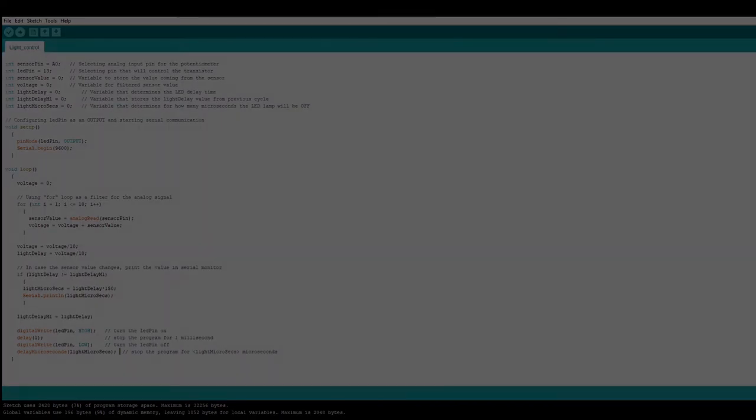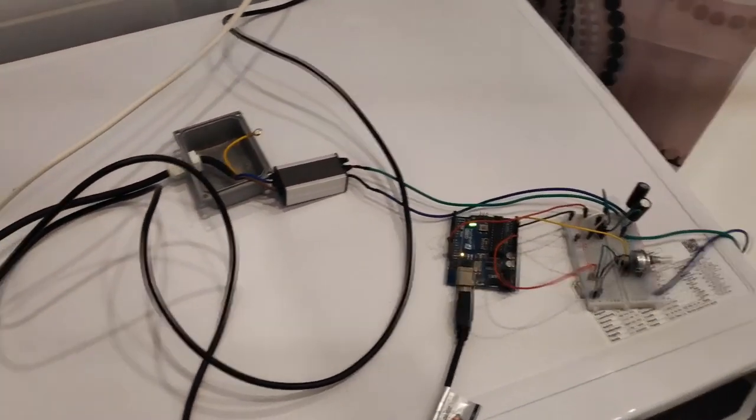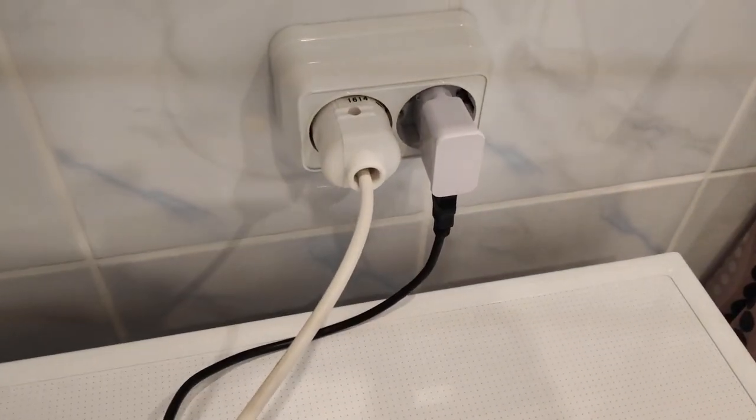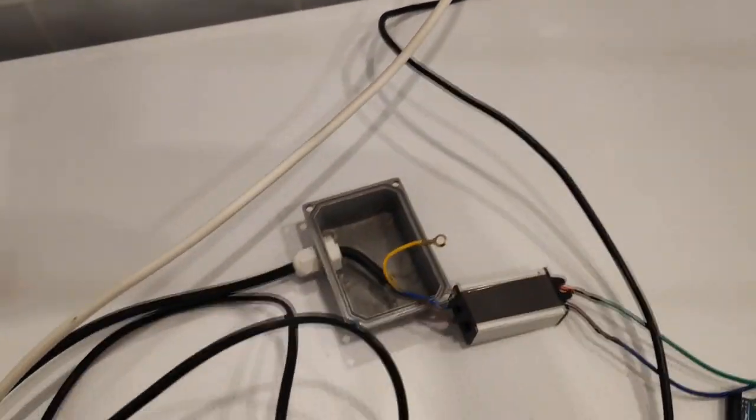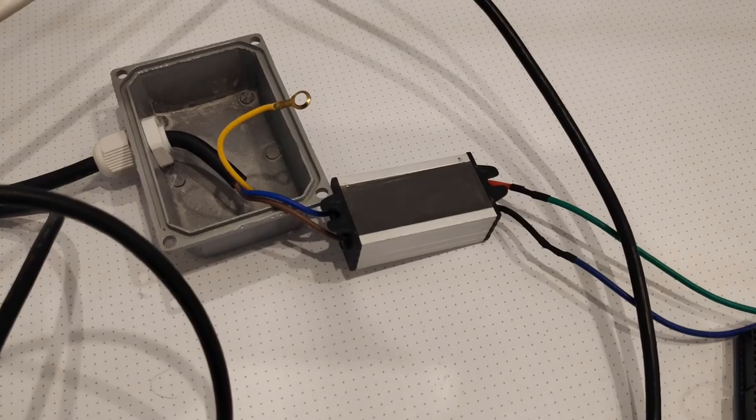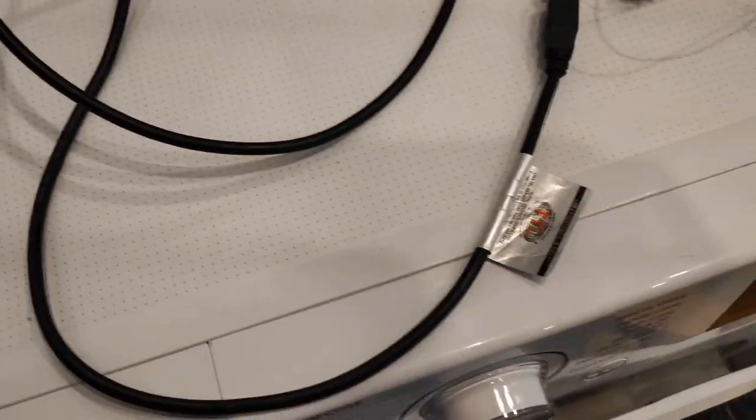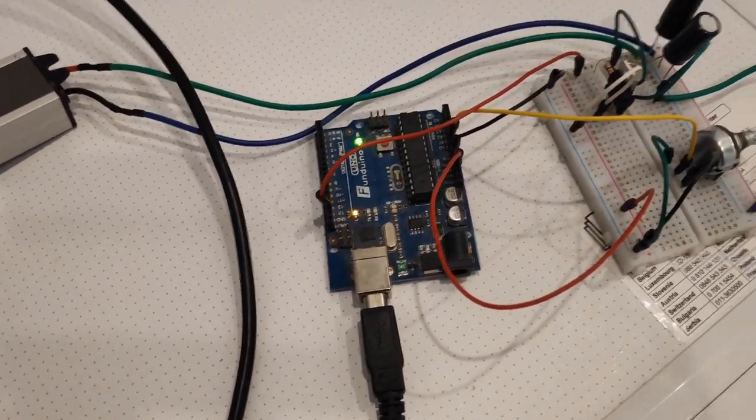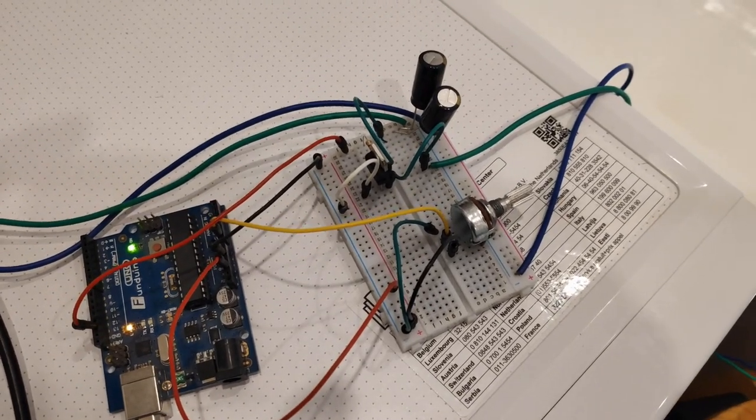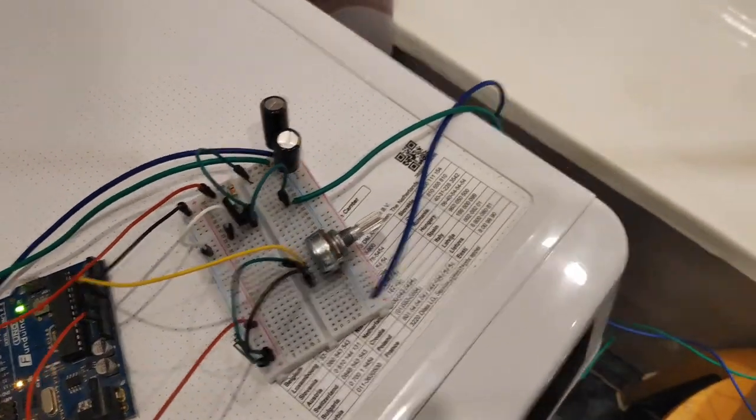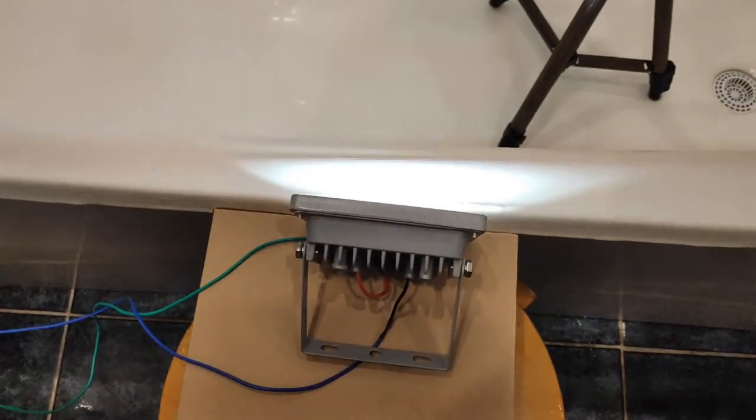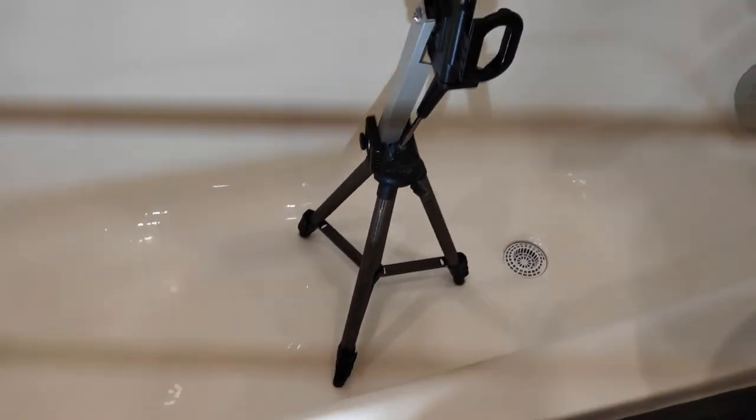Now I will show you the setup while making this video. Here you can see the power connections for the Arduino board and for the LED lamp. Next comes the LED driver. Here you can see the Arduino Uno and the breadboard with the transistor and potentiometer. And here is the LED lamp that I used.